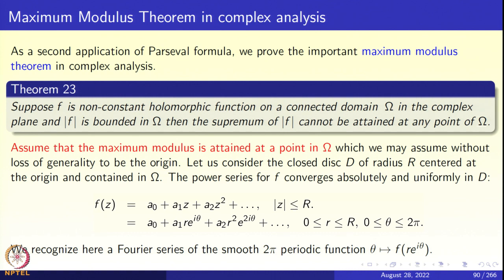We may assume the point where |f| attains its supremum is at the origin. Take a closed disk D of radius R centered at the origin and contained in Ω. The power series for f converges absolutely and uniformly in D: f(z) = a₀ + a₁z + a₂z² + ··· Substituting z = re^{iθ}, we recognize a Fourier series for the 2π-periodic function θ ↦ f(re^{iθ}).